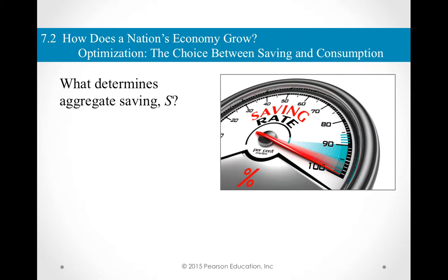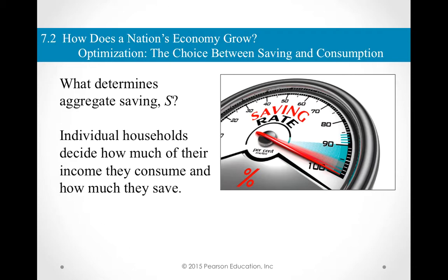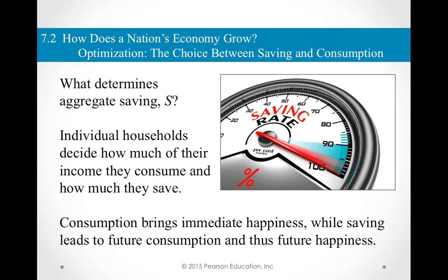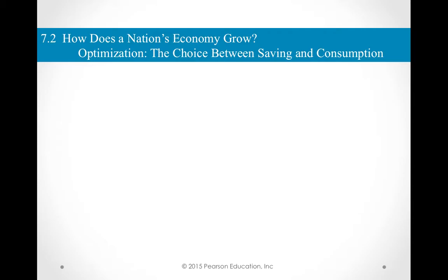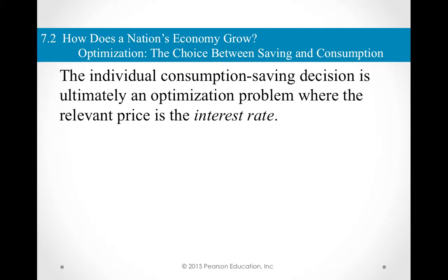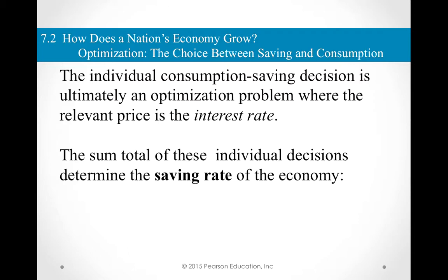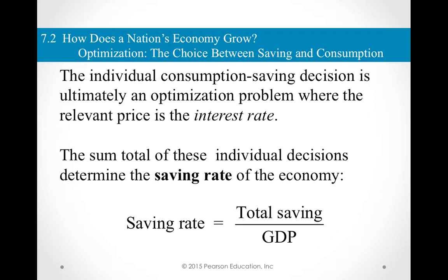Where do savings come from? Savings come from individuals — we determine how much of our income to consume and how much to save. This is an optimal decision because it involves a trade-off: consumption today brings immediate happiness, while savings leads to future consumption and thus future happiness. The individual consumption-saving decision is ultimately an optimization problem where the relevant price is the interest rate. When we add all these individual decisions together, we determine the savings rate of the economy.